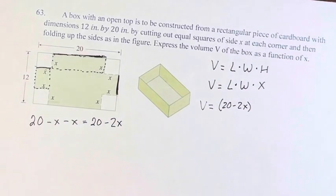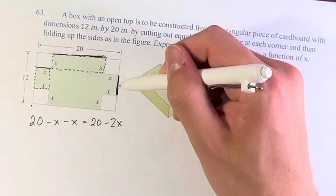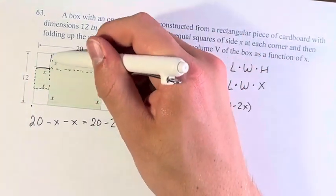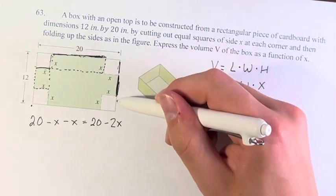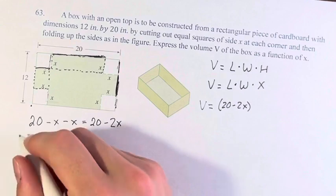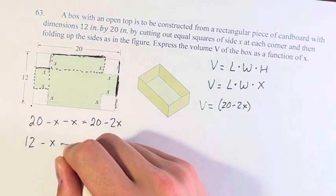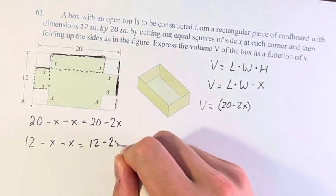And we can find W. Similar thing. We take the whole 12, and to get just this part, we cut off x here, which corresponds with that, and we cut off x here, which corresponds with that. So 12 minus x minus x is 12 minus 2x.